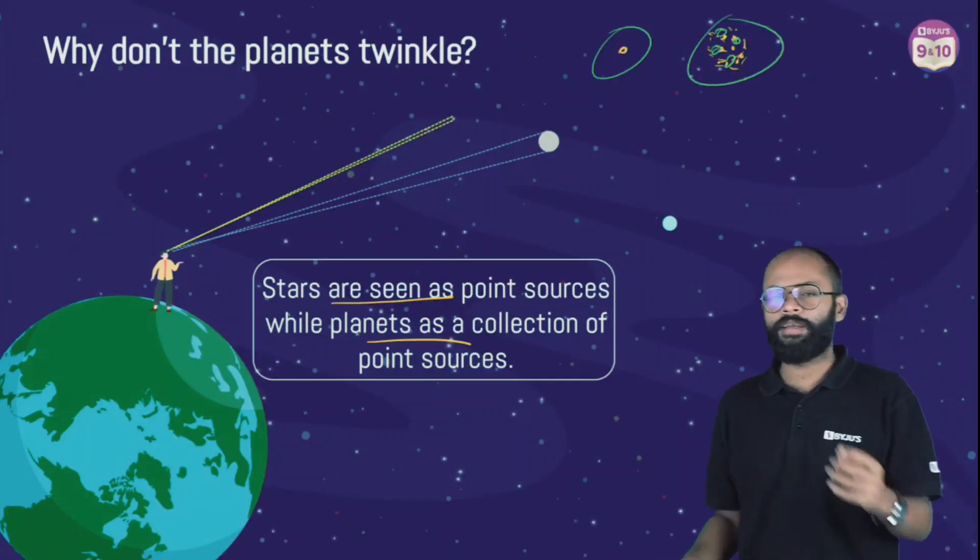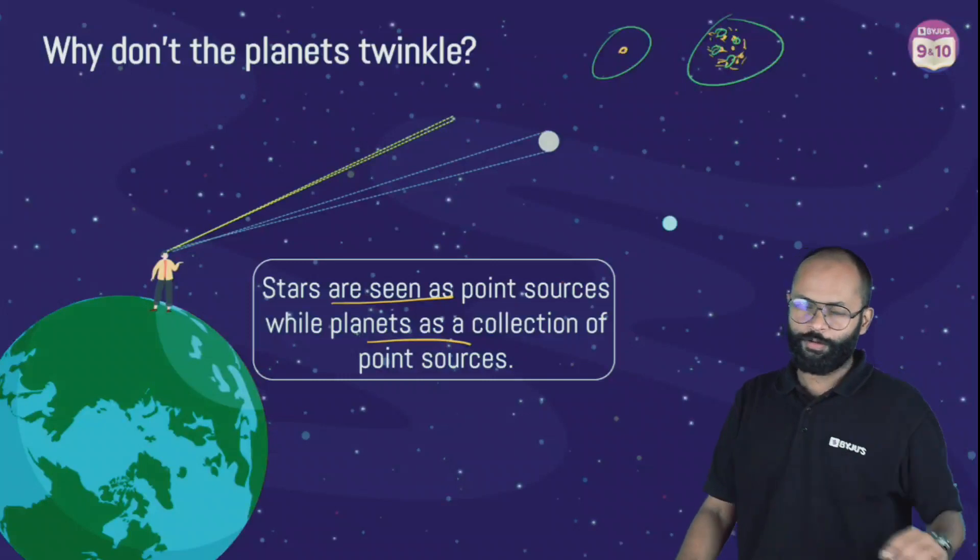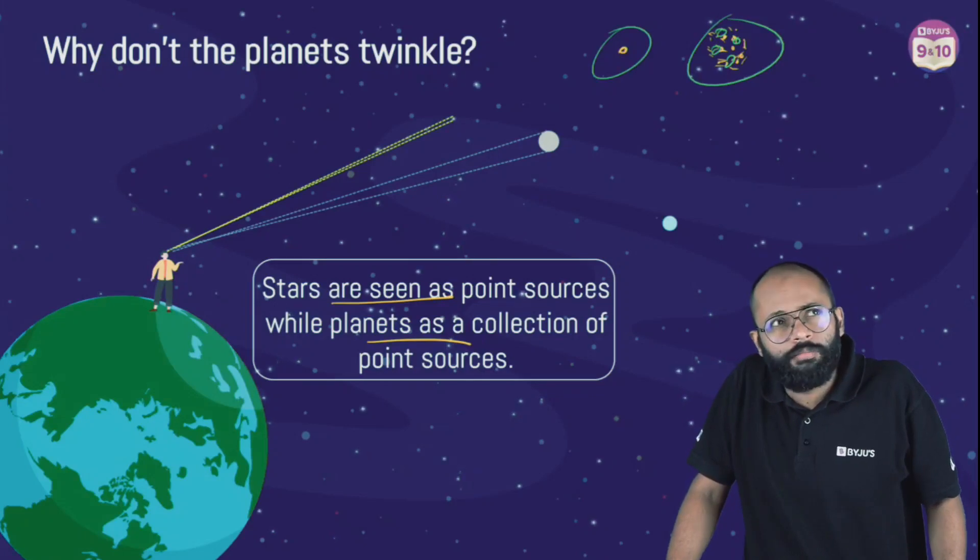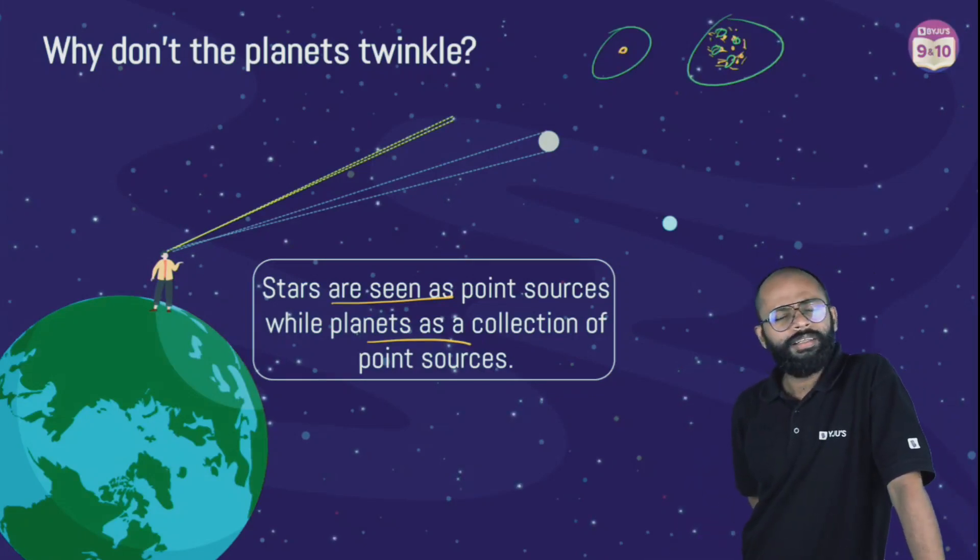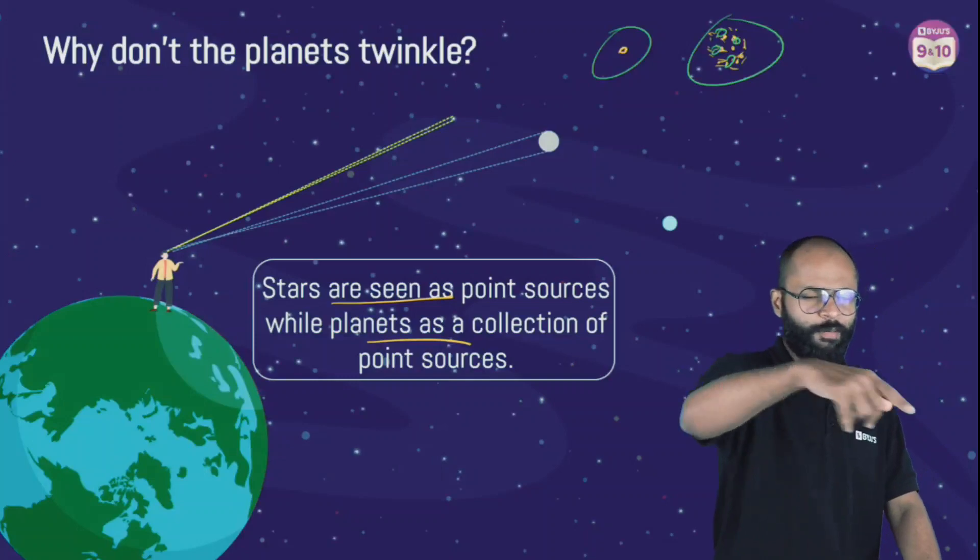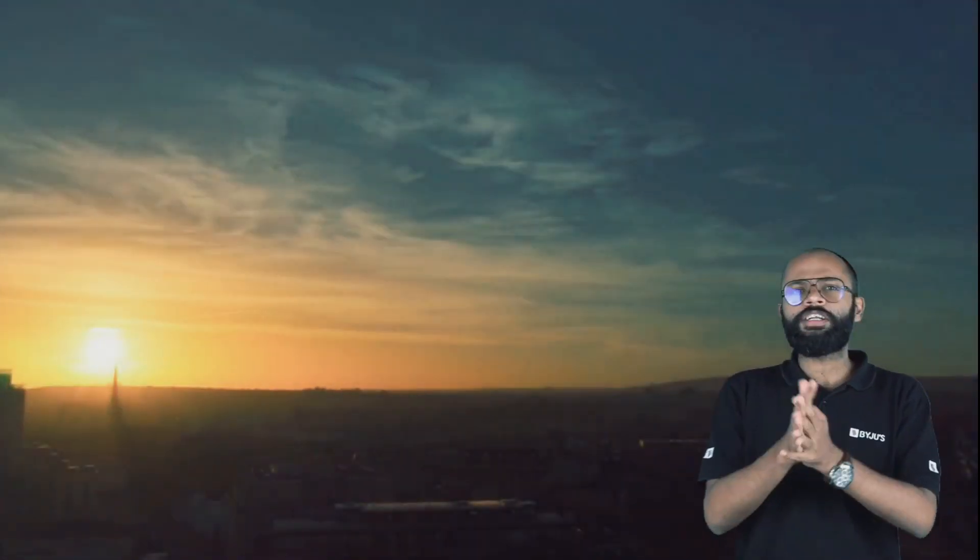Now let me ask you something, one more question which is a homework for all of you. Stars we are saying are point sources, but planets are not. But stars are way bigger than planets. Why then are stars smaller than planets? This is a homework question. I have explained this multiple times. I want the answers in the comment section. Don't worry, I'll see your answers and reply back to you.